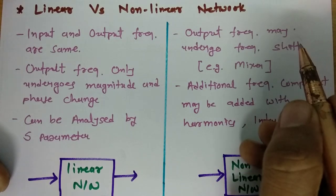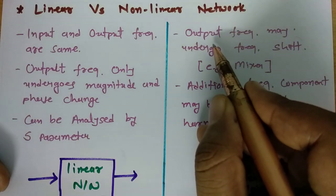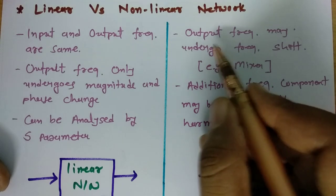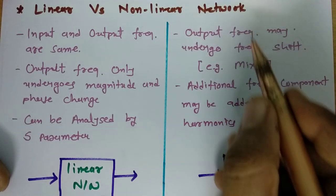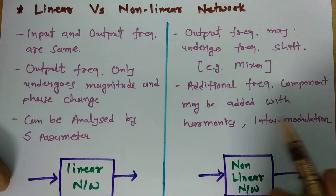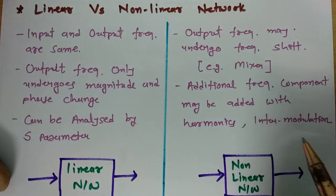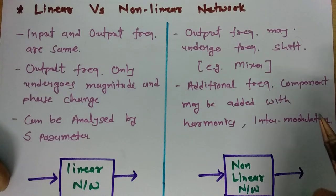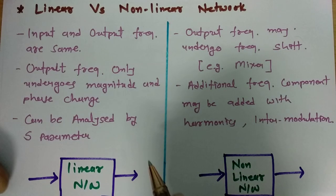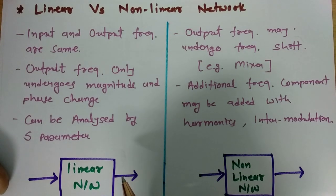When we talk about non-linear networks, the output has a different frequency — there will be a frequency shift in case of non-linear networks, such as a mixer. There will be additional frequency components added because of harmonics and intermodulation. So in a non-linear network, the output signal frequency differs from the input frequency, whereas in a linear network, the output frequency is the same as the input frequency.